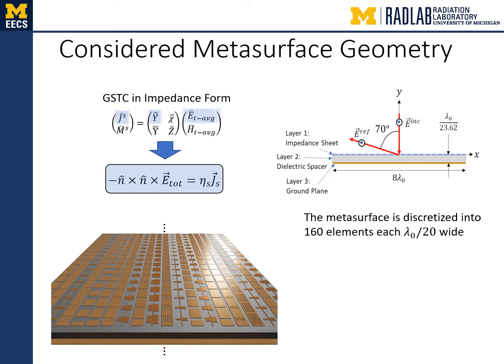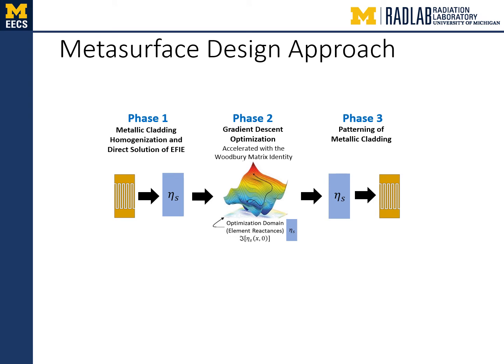The metasurface design example is a wide-angle reflecting metasurface where a normally incident plane wave is reflected to an angle of 70 degrees. The metasurface is finite in width and thickness — 8 lambda wide and lambda over 23.62 thick — and consists of three layers. Layer 1 is an impedance sheet described by the GSTC in reduced form, the second layer is a dielectric spacer, and the third layer is a ground plane. The metasurface is discretized into 160 by 20 elements. To design the metasurface, we follow a three-phase design approach. In phase 1, the metallic cladding is homogenized and an integral equation is formulated using the GSTC boundary condition. The integral equation is solved directly after stipulating the desired total field — the normally incident plane wave plus the 70-degree reflected plane wave — resulting in the necessary electric impedance for the desired field transformation.